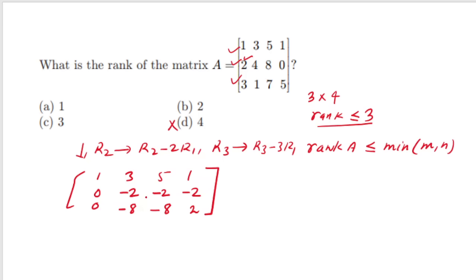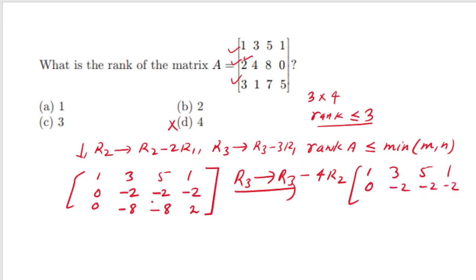You can see that the rank is 3, even before completing the full reduction. If you want the full row echelon form, perform R3 → R3 − 4·R2, which gives a third non-zero row with last element 10. You can clearly see the rank of this matrix is equal to 3 because it has 3 non-zero rows. When solving MCQ questions we don't need to do this last step. The correct option is C — rank is 3.